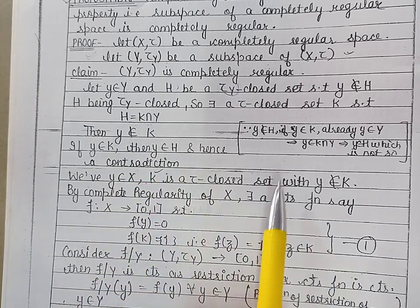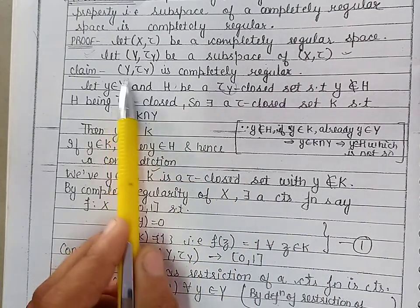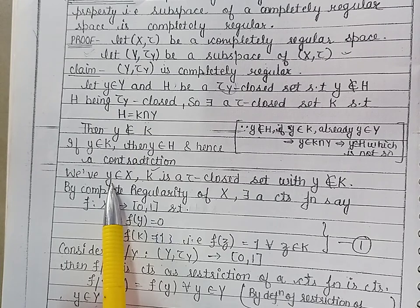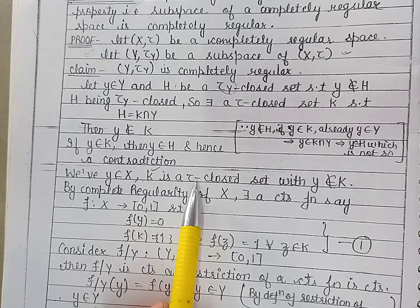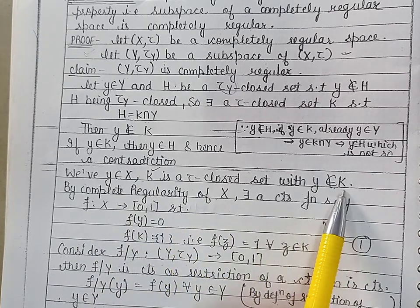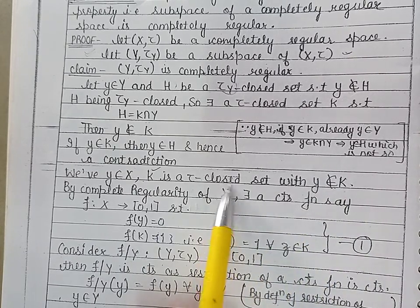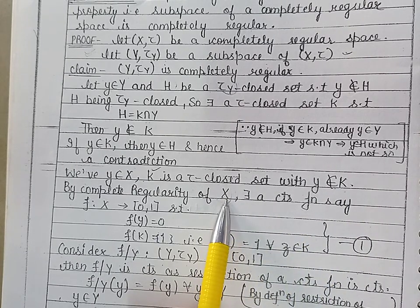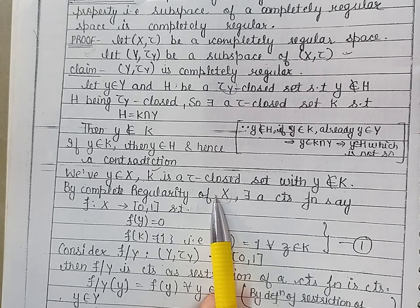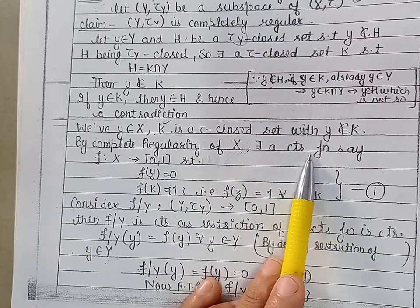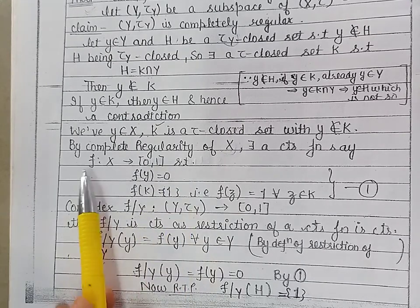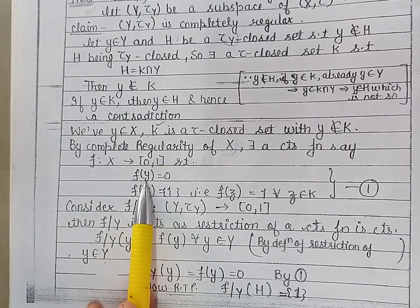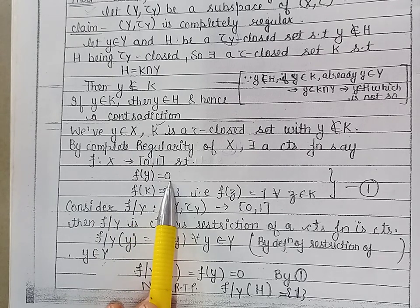Because y belongs to Y and Y is contained in X, the point y belongs to X. Since K is closed in tau and y does not belong to K, and X is completely regular, by the definition of completely regular there exists a continuous function F from X into [0,1] such that the image of y is 0 and the image of closed set K is singleton {1}.